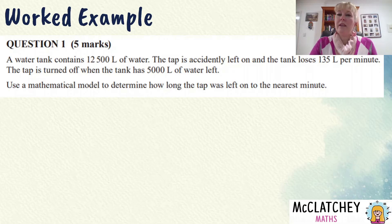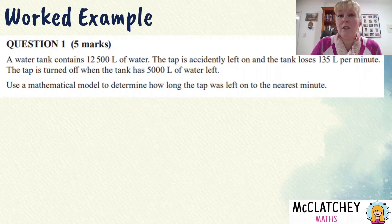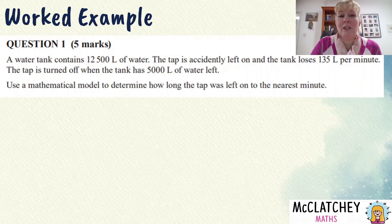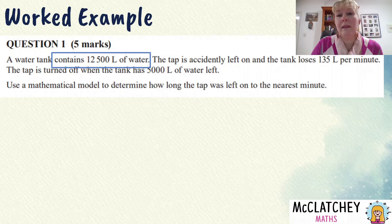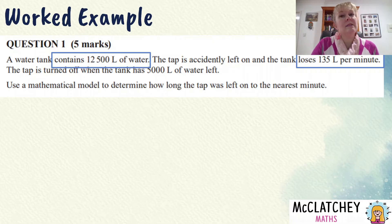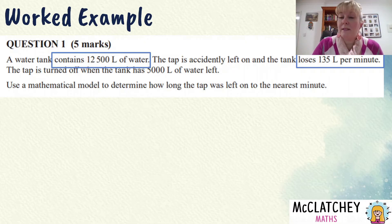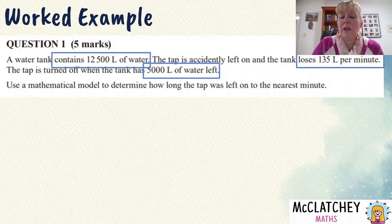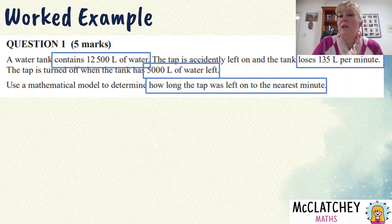In this particular question we're actually going to have to develop some algebra. We're going to unpack the words using 'see, plan, do, check' — which is Polya's problem solving model. We highlight the key information: the tank starts with 12,500 litres; it's losing 135 litres per minute — the word 'per' tells us that's a rate; the tap is turned off at 5,000 litres; and our final answer needs to be given to the nearest minute. You only really need to highlight the important things critical for solving the problem.